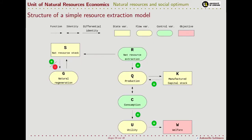So here is how our flowchart is modified. We see that, differently from all other functional forms for which we can define a clear direction, in this case natural regeneration depends on the natural resource stock, but it can be in a positive or negative way: when the stock is small, increasing it also increases natural regeneration, but when we pass a certain point, further increase of the stock causes a decrease in regeneration.